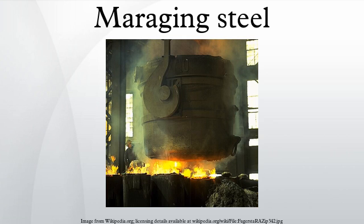The steel is first annealed at approximately 820°C for 15 to 30 minutes for thin sections, and for 1 hour per 25 mm thickness for heavy sections, to ensure formation of a fully austenitized structure. This is followed by air cooling to room temperature to form a soft, heavily dislocated iron-nickel lath martensite. Subsequent aging of the more common alloys for approximately 3 hours at 480 to 500°C produces a fine dispersion of Ni3(X,Y) intermetallic phases along dislocations left by martensitic transformation, where X and Y are solute elements added for such precipitation.